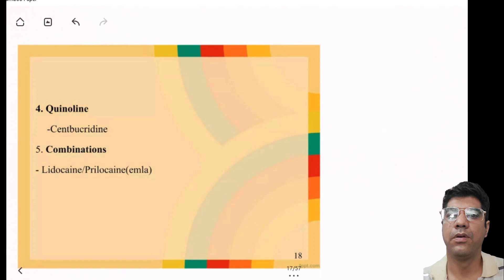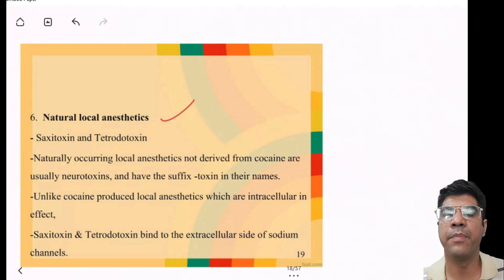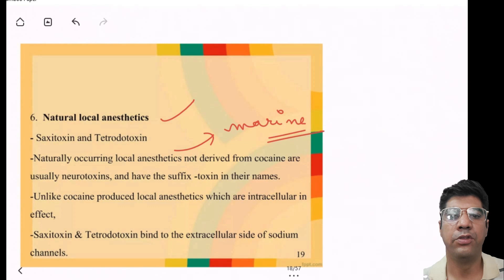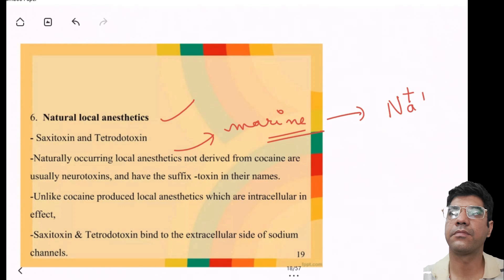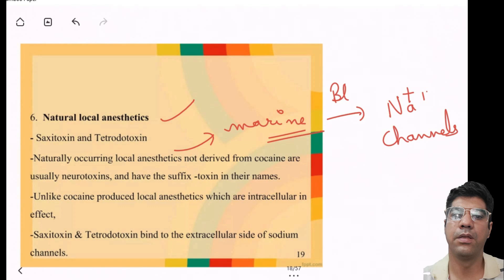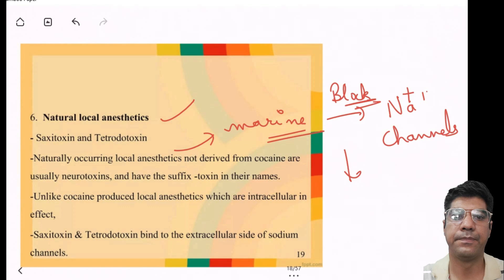What are the natural local anesthetics? They include saxitoxin and tetrodotoxin. Tetrodotoxin is found in various marine creatures. Its mechanism of action is to block voltage-gated sodium channels, inhibiting the influx of sodium that is essential for the propagation of nerve signals, resulting in loss of sensation and muscle paralysis in the affected area.